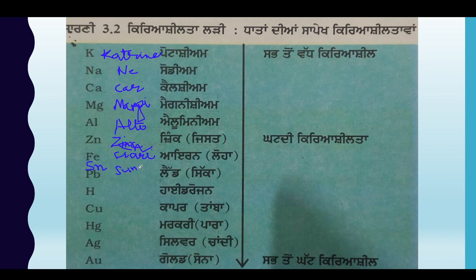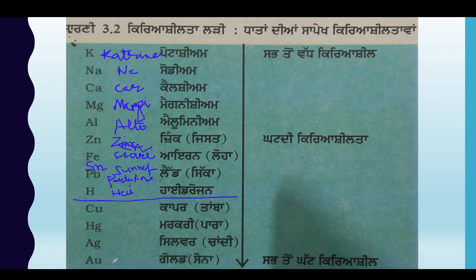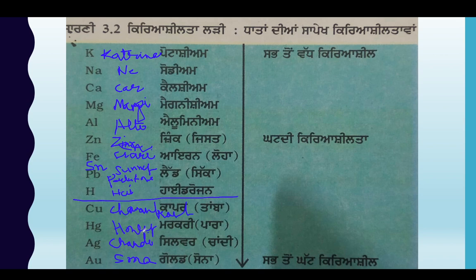Sunny Leone — Pb, Padukun. So: Sunny Leone, Padukun. This is the mnemonic: Katrina bought a car Alto, Zen, Ferrari, Sunny Leone, Padukun. AU is Gold — Gold is our Sona. Chandi Sona, Chandi — Sona Chandi, Honey, Chamar, Prash Chavan Prash. So: Sona, Chandi, Honey, Chavan, Prash.